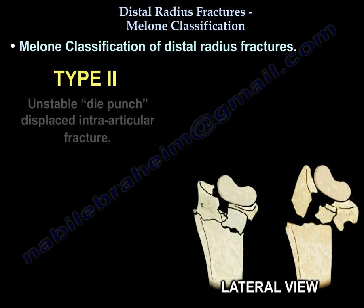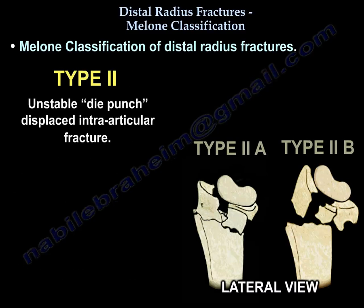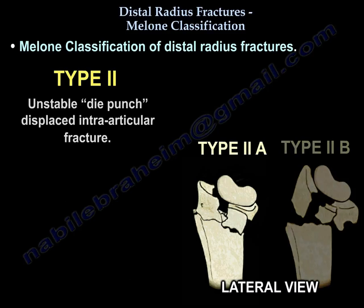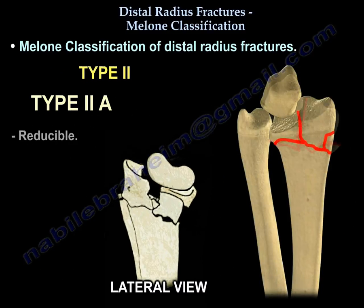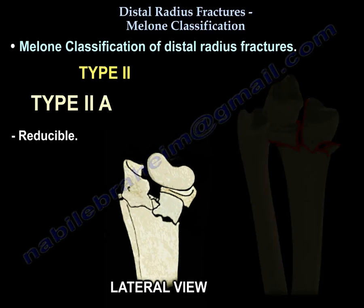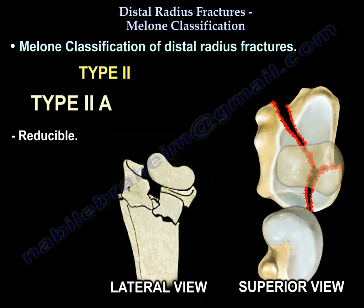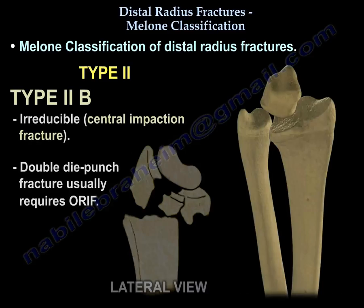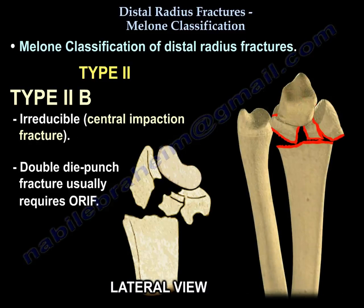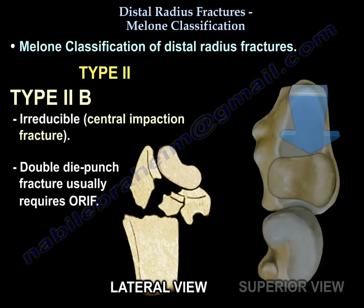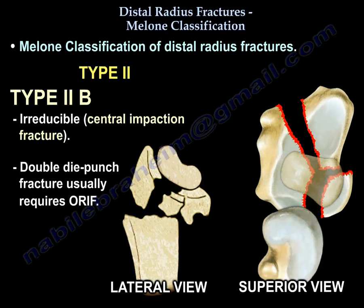Type two: unstable, displaced, die punch fracture. You still have two components here — one dorsal and one volar. Type two A is reducible. Type two B is irreducible. Type two B has central impaction and is usually treated with ORIF by surgery.